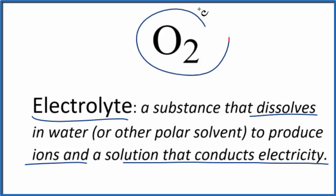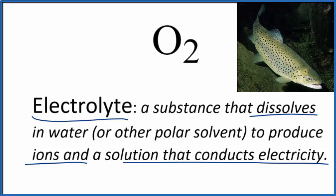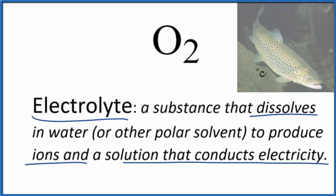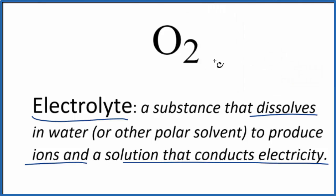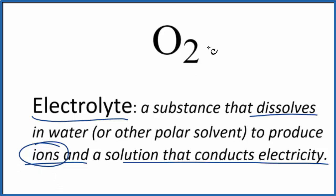Oxygen, O₂, will dissolve in water. After all, that's how fish are able to get oxygen — from the dissolved oxygen in water. But because oxygen involves two non-metals, it doesn't actually break apart into ions. So because there's no breaking apart into ions, the solution can't conduct electricity.